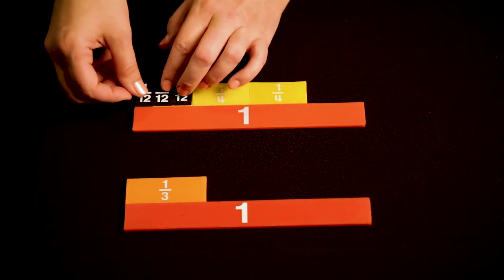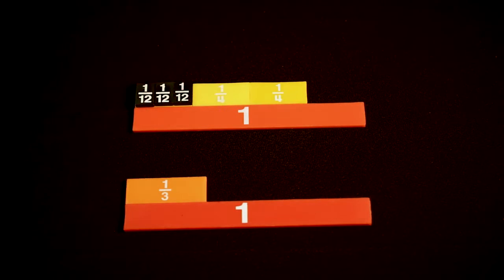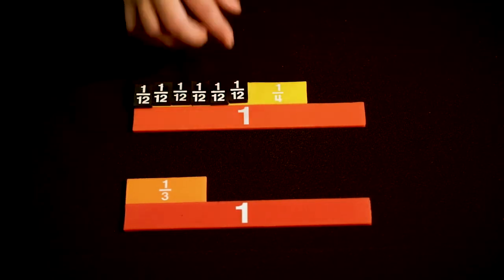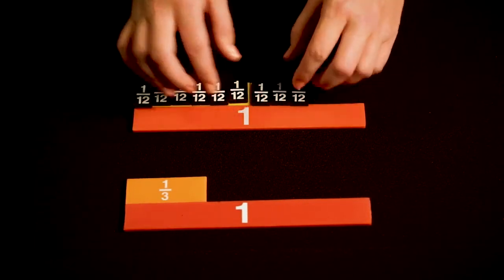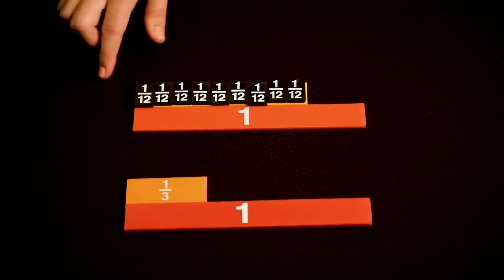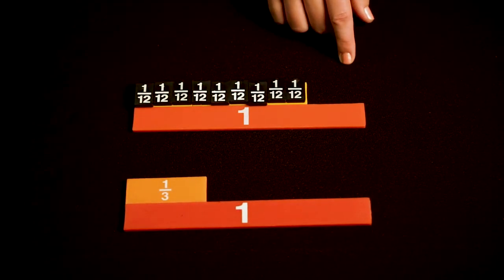So that means I break each of these 1 fourth pieces into 3 twelfths. So that 1 fourth piece equals 3 twelfths, that 1 fourth piece equals 3 twelfths, and this last 1 fourth piece equals 3 twelfths. So now we have 9 twelfths.